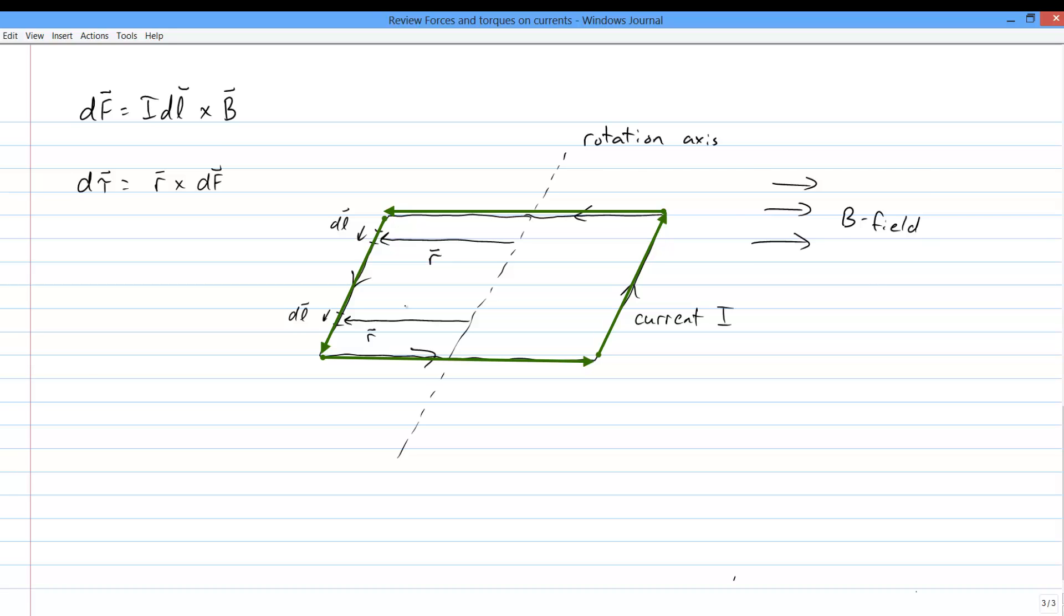If I have a bunch of current carrying wires sitting in a magnetic field, every little differential piece of that wire is going to be feeling some differential force. And each of those bits of force results in a bit of torque, and we can use integration to add them all up and find the total.